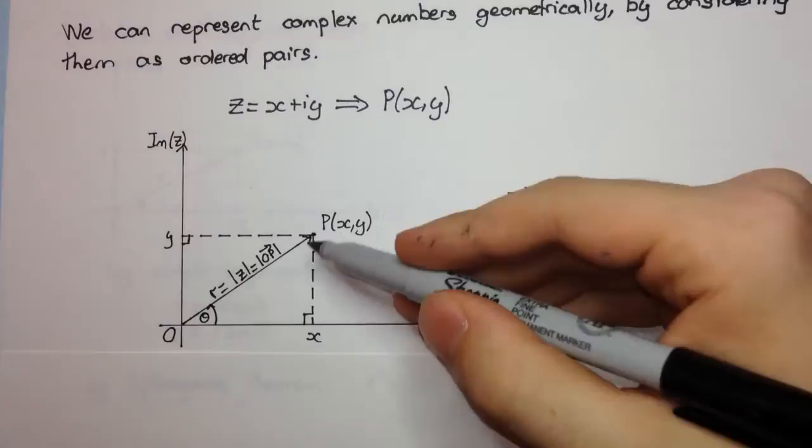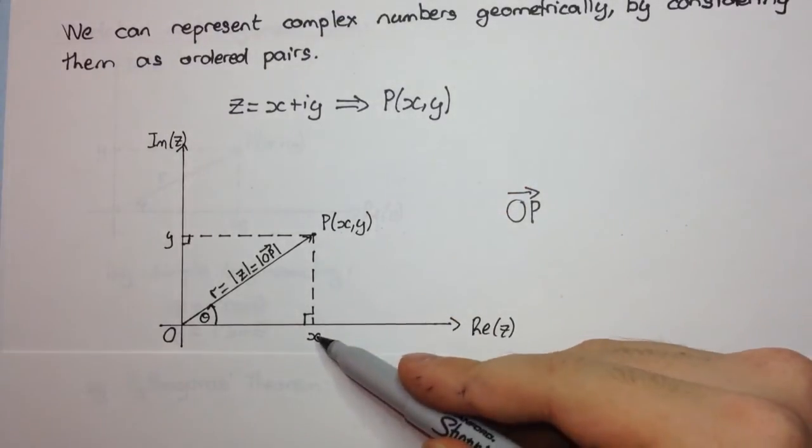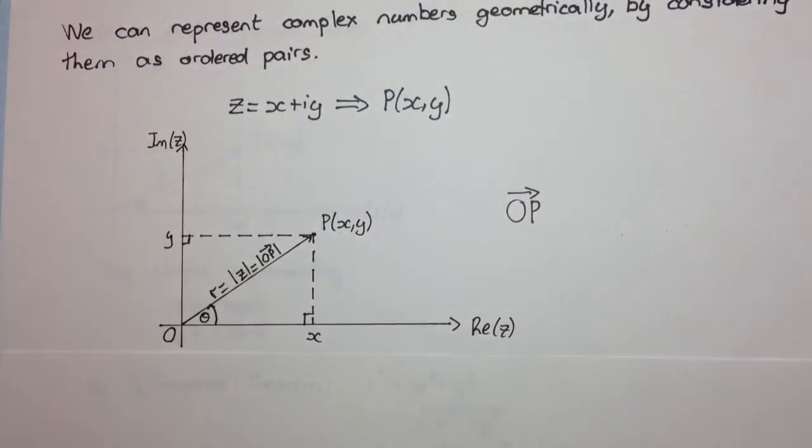Right, so if we just look at this triangle here, this goes across x units, and goes up y units, right? It's fairly simple.